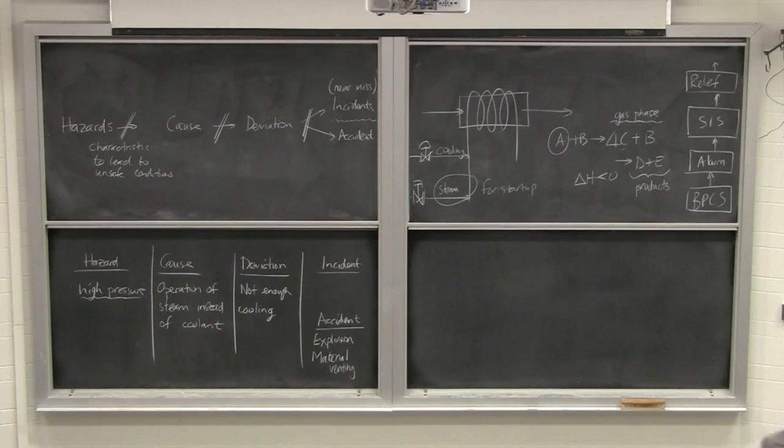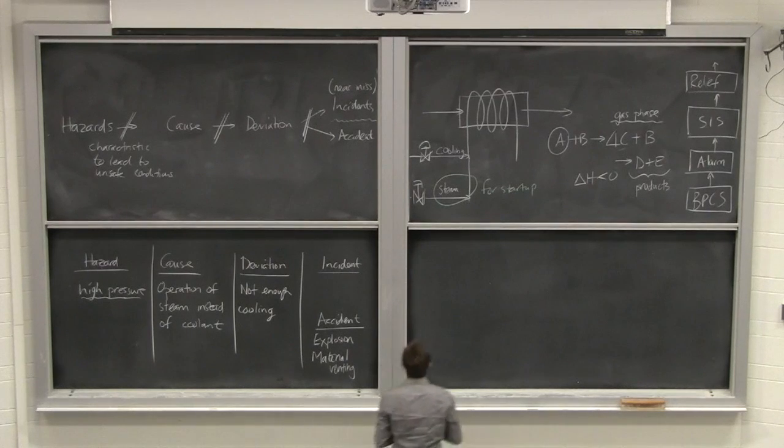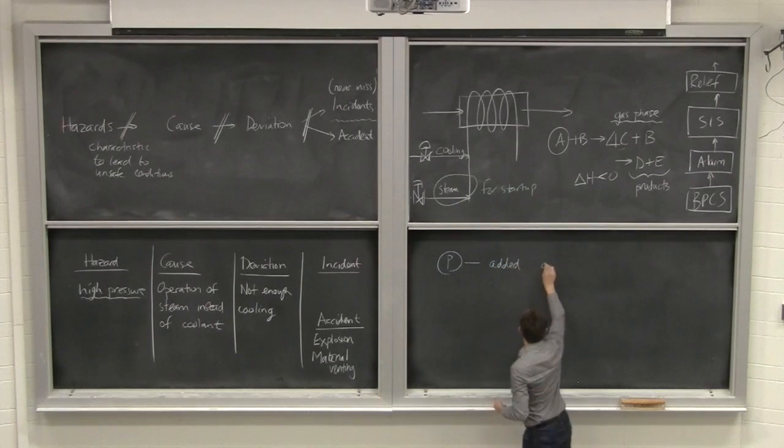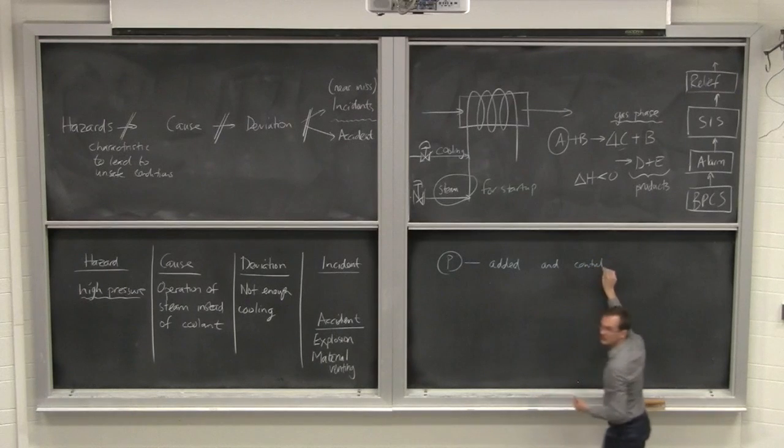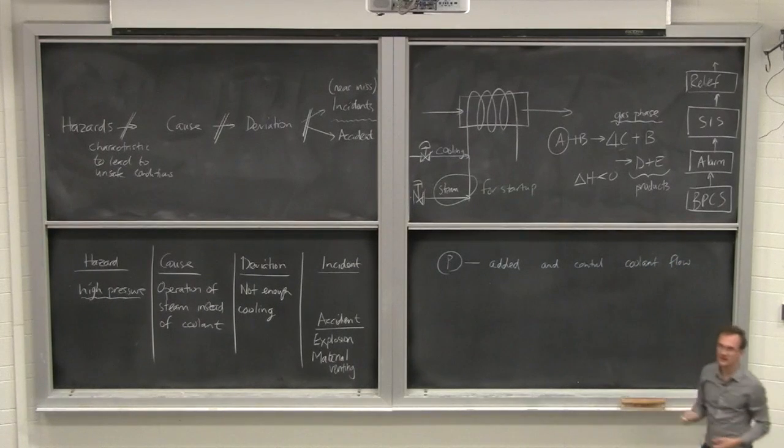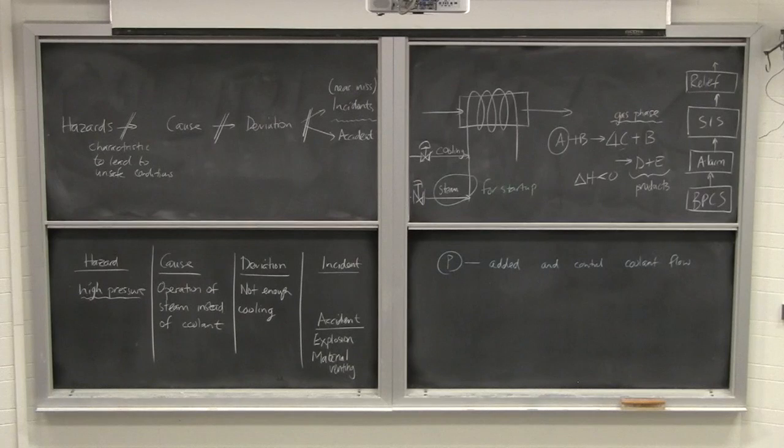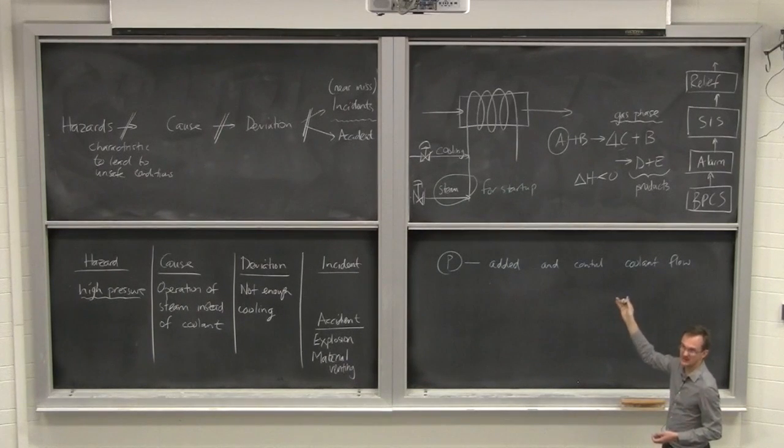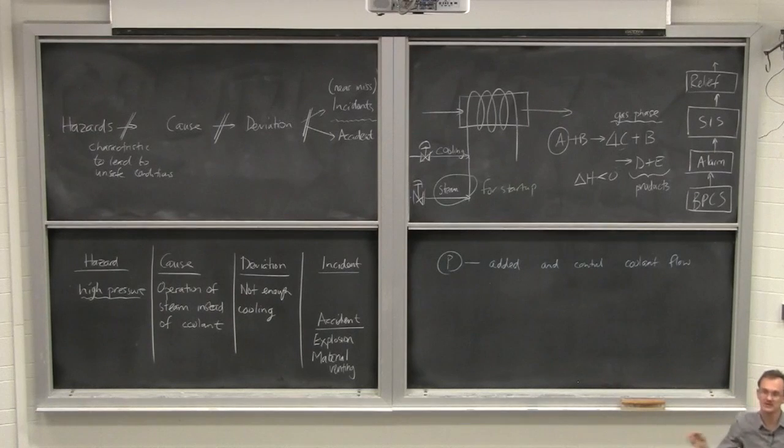Okay, some suggestions from some groups. P added. So you add a pressure sensor. And then you control coolant flow. Okay, let's presume that that was there, in fact. The same scenario could still play out with the pressure sensor there and to control the coolant flow. What could have happened is that that coolant flow is open to try and reduce the pressure, but the steam is still going.